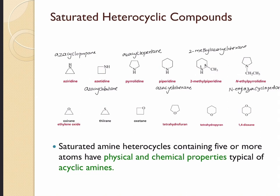Here are some saturated heterocycles with oxygen and sulfur heteroatoms, named similarly. A cyclic three-membered ring with oxygen is generally called an oxidane ring, but in IUPAC nomenclature we use the prefix 'oxa,' just like we used 'aza' for nitrogen. So the IUPAC name for the oxygen-containing three-membered ring is oxa cyclopropane. The next one is a thiirane ring and the IUPAC name for that is thia cyclopropane.